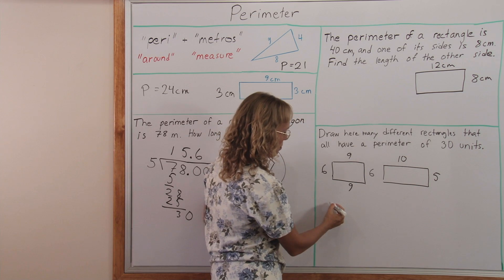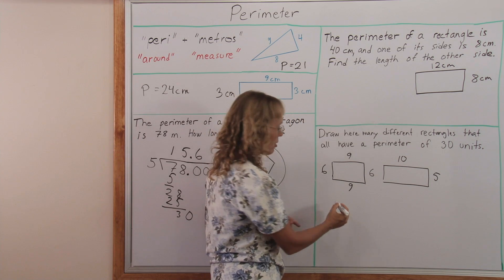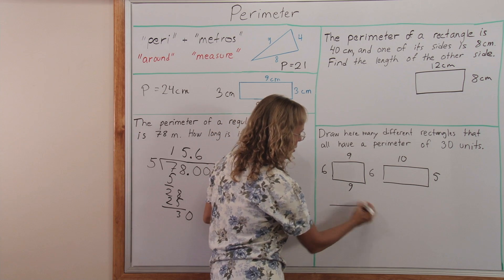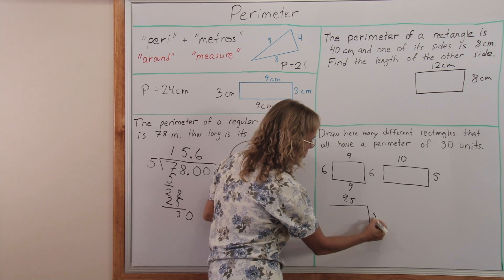And even more if you use decimals and fractions. You could make one side to be 9 and a half and then this side would be 5 and a half.